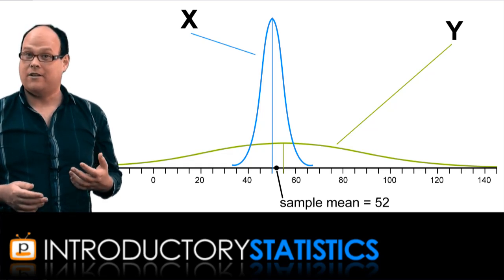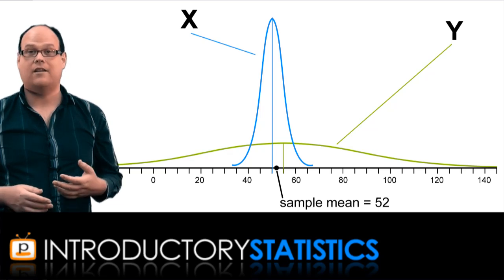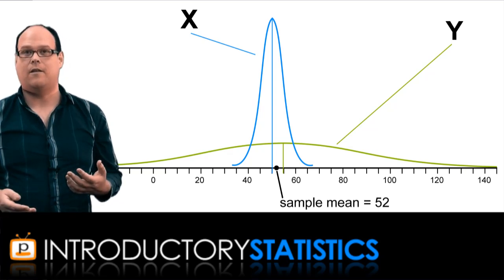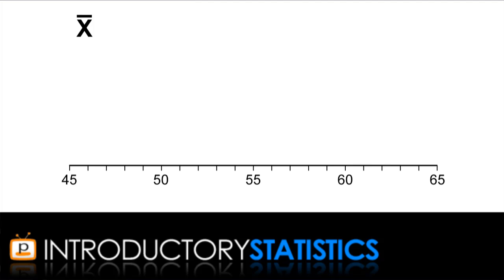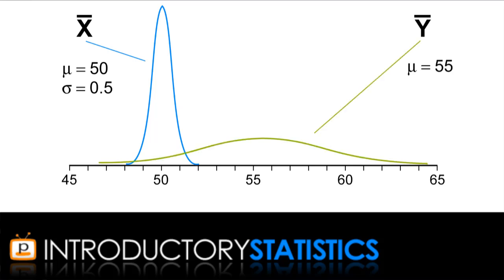Now the sampling distributions are actually very different to the original populations. The scale has changed enormously on these diagrams. The sampling distribution of x is normal, with a mean of 50, and a standard deviation of 0.5. And the sampling distribution of y is also normal, but it has a mean of 55, and a standard deviation of 3. Now our sample mean of 52 came from one of these sampling distributions. Looking at them, which one do you think it is?